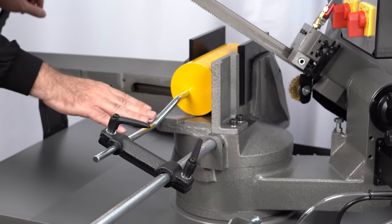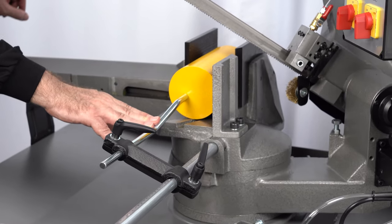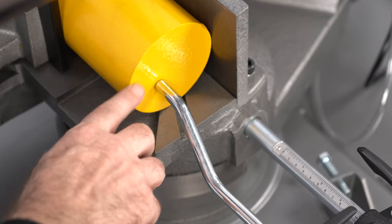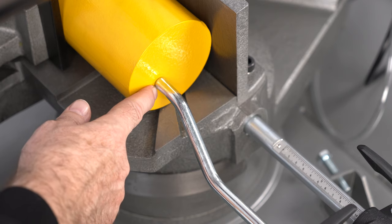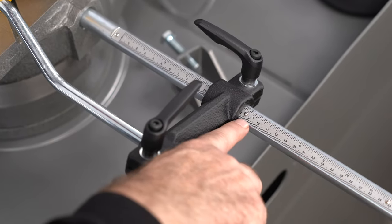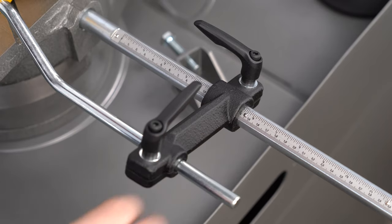This machine also features a manual length stop device, so you can use this to make repeat cuts on the same bar. Simply touch the device onto the end of the workpiece and measure off your desired length on the scale over here for easy repeat cutting.